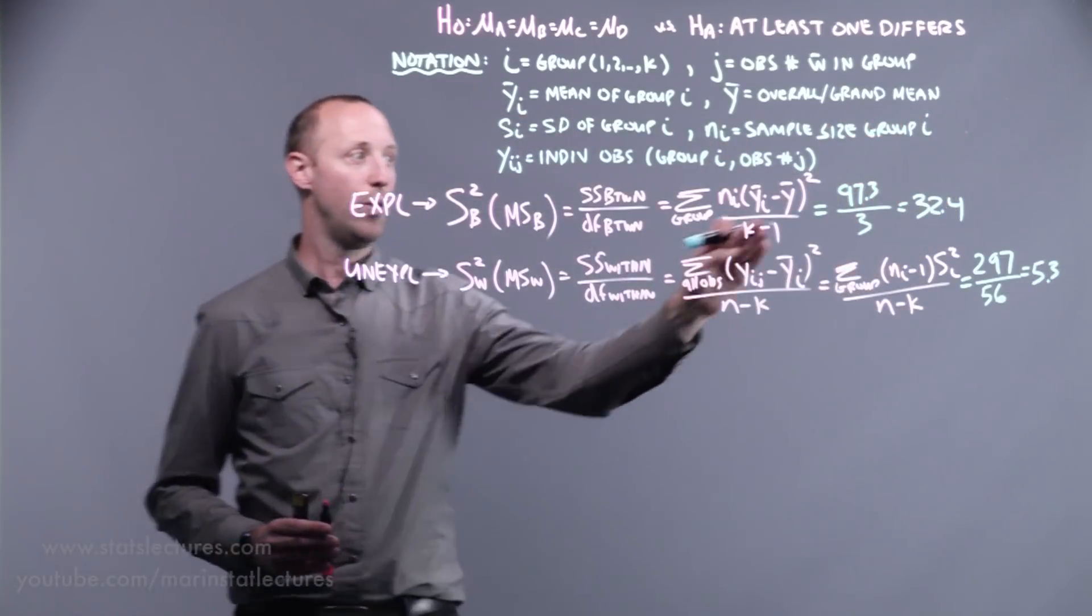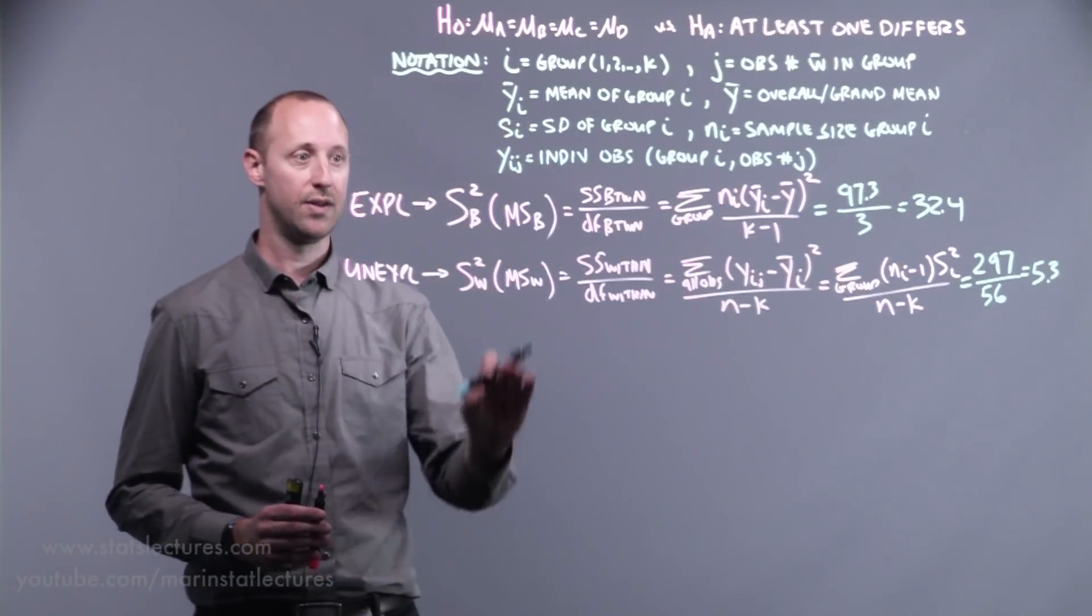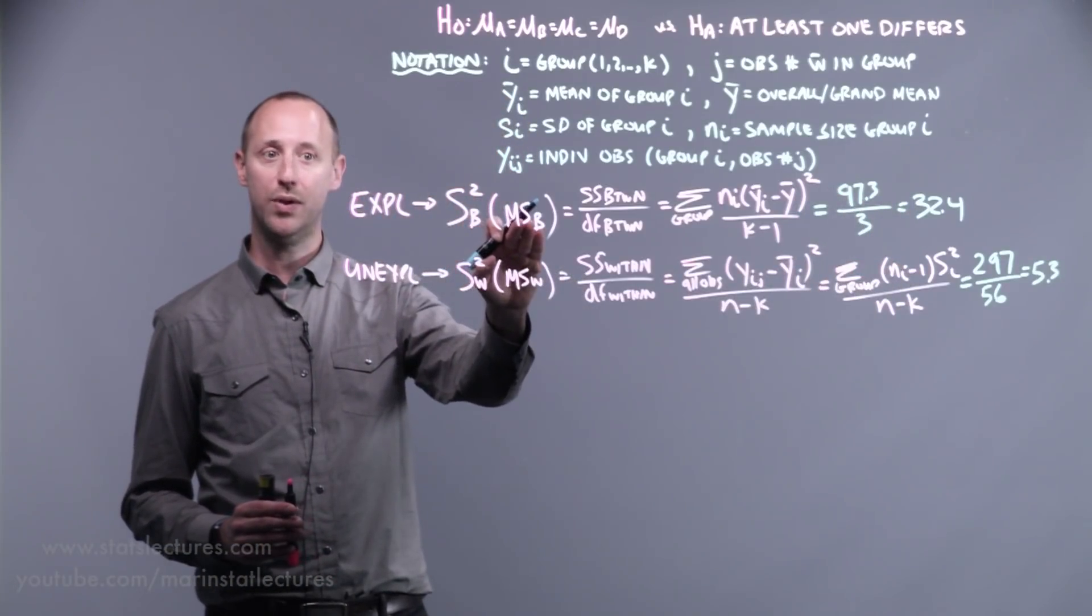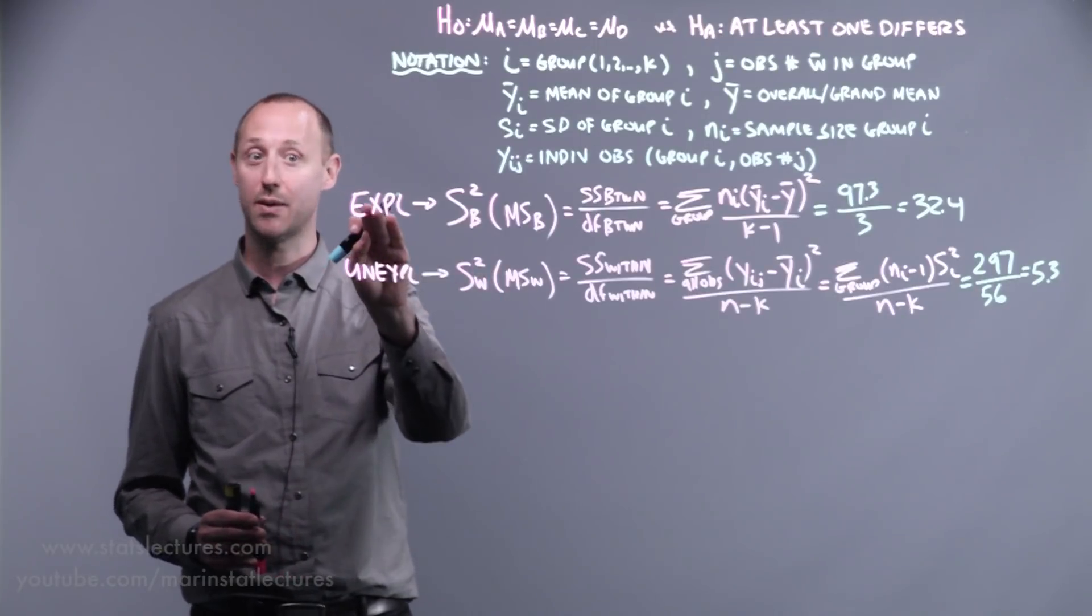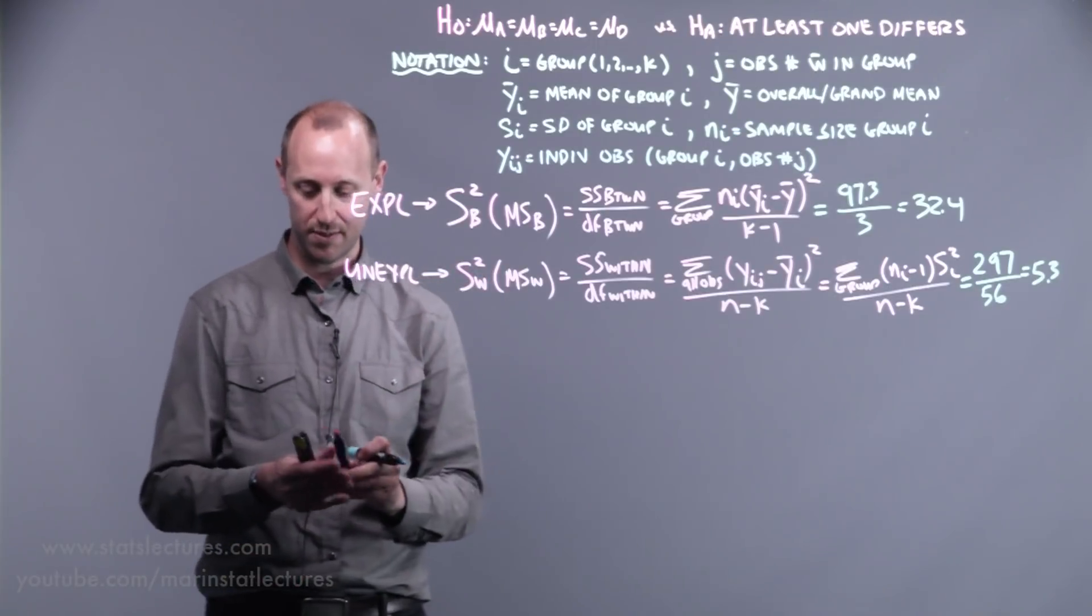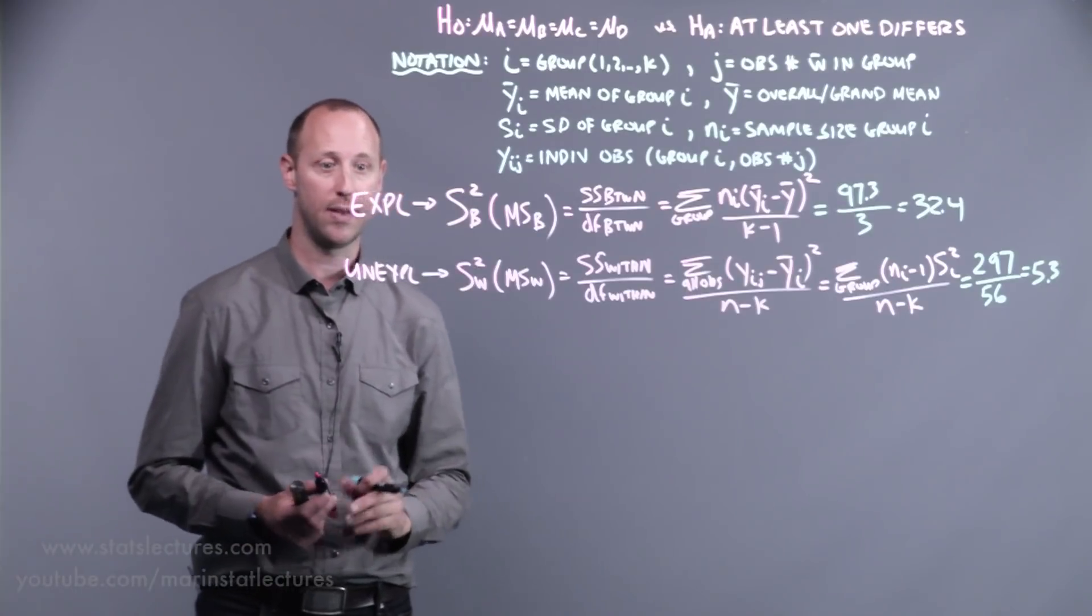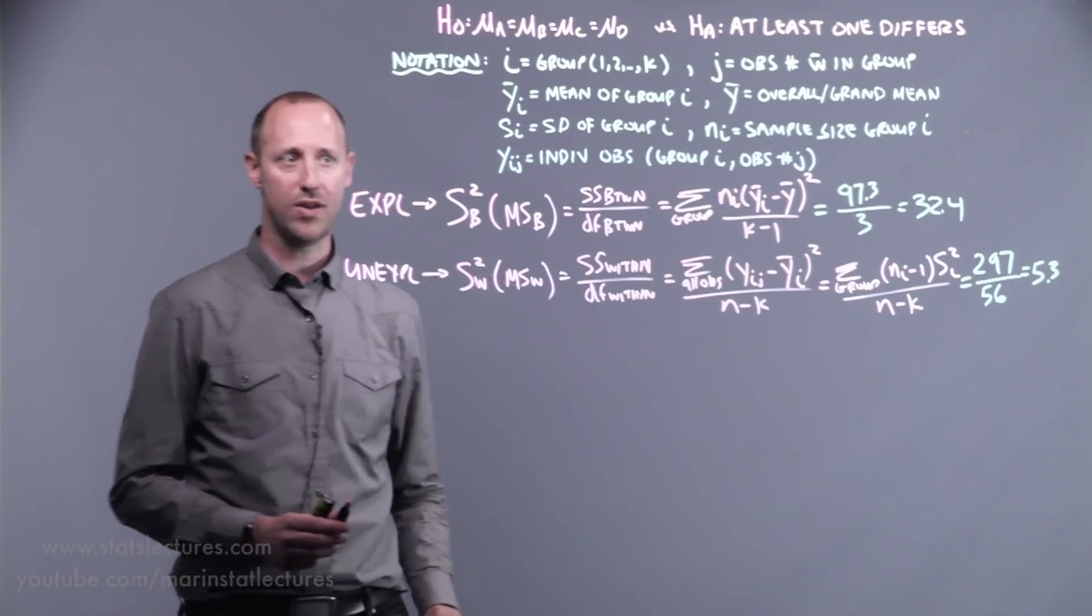So as noted, we want to compare these two to each other. The mean square between groups to the mean square within groups. The average sum of squares that can be explained by diet, the average sum of squares that cannot be explained by diet.